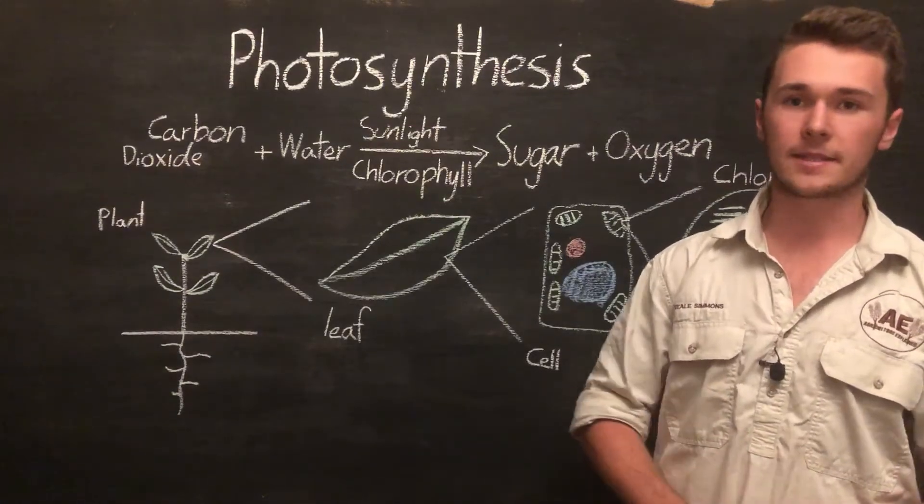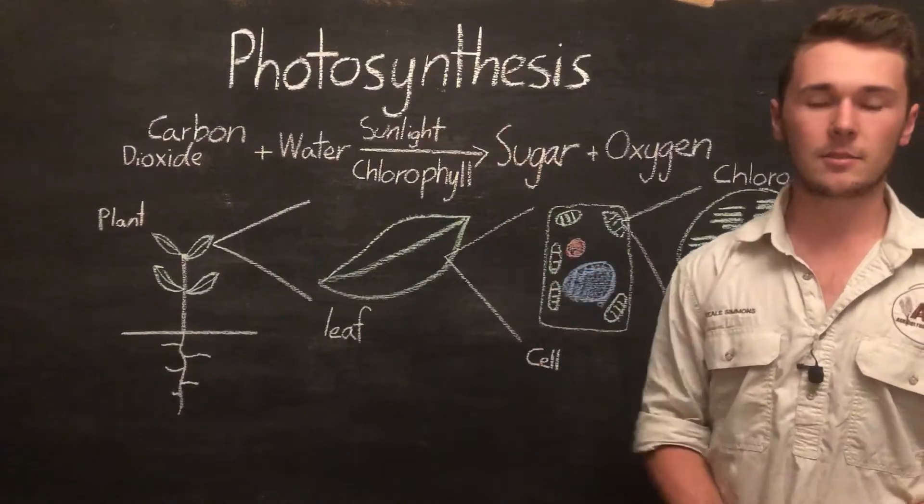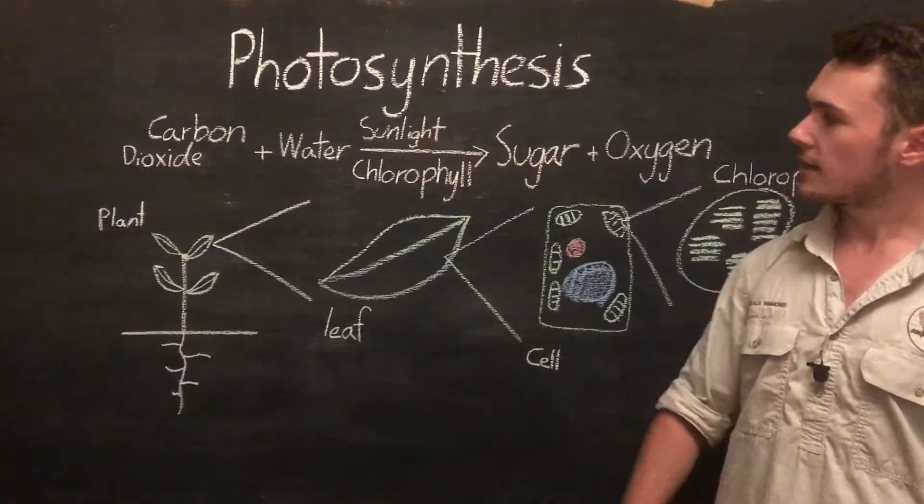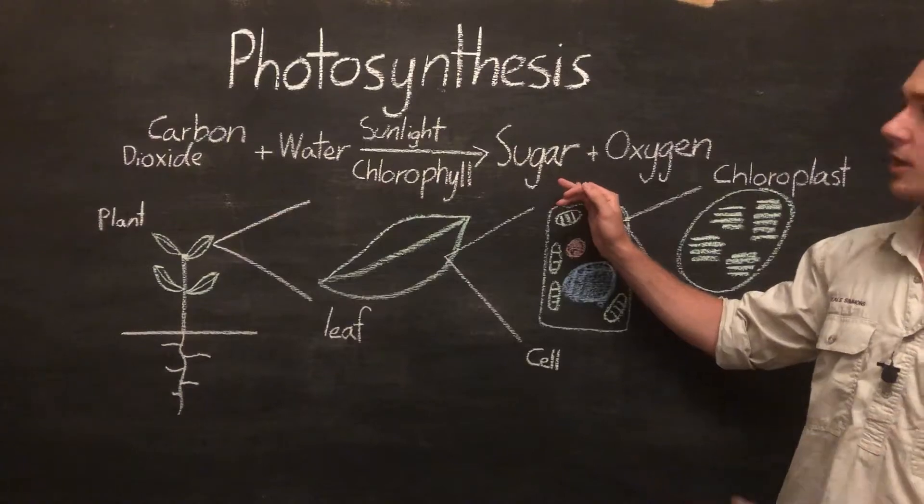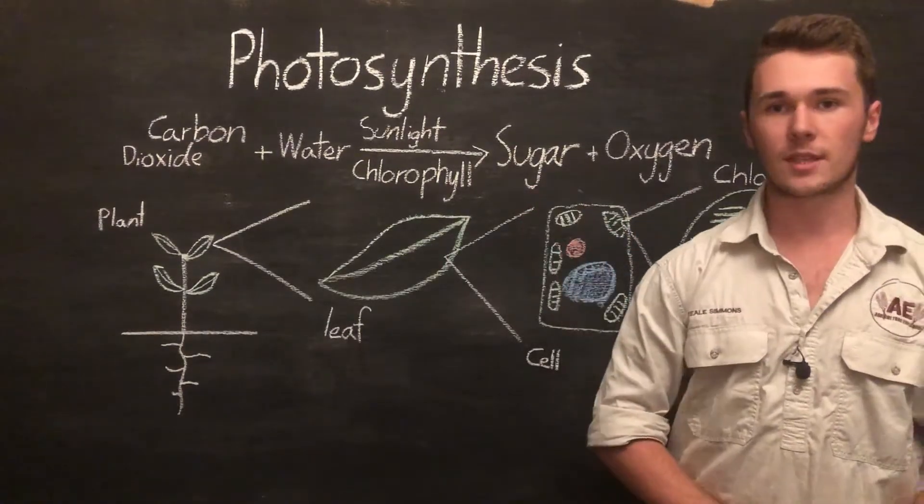So the amazing thing about plants is that by using this process of photosynthesis they basically become little solar panels. And that is they're taking light in and they're outputting energy. Now this energy is stored, so it's stored energy but the plant can use that later.